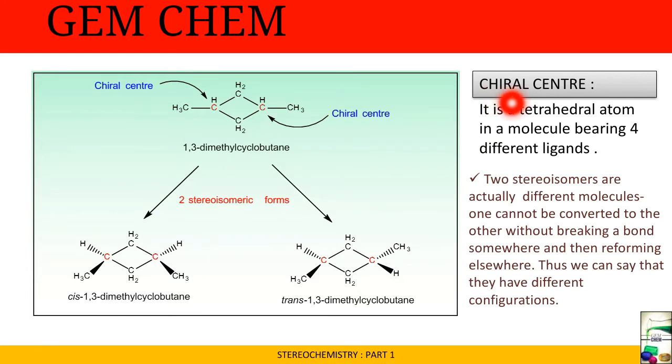The two stereoisomeric forms are when these two CH3s are present towards us and when one CH3 is towards us and another CH3 is below the plane. In this case, two CH3s are above the plane and two hydrogens are below the plane, whereas in the other case one CH3 is above and another is down the plane. We can name it as cis and trans. Two stereoisomers are actually different molecules. One cannot be converted to the other without breaking a bond somewhere and then reforming elsewhere. Thus they have different configurations.